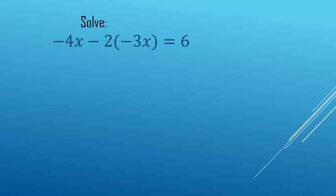All right, to solve this equation here, we do need to clean up or simplify the left-hand side there. We're going to use order of operations. Multiply first here. Negative 2 times negative 3x is going to make a positive 6x.